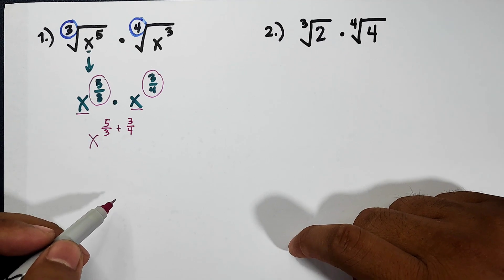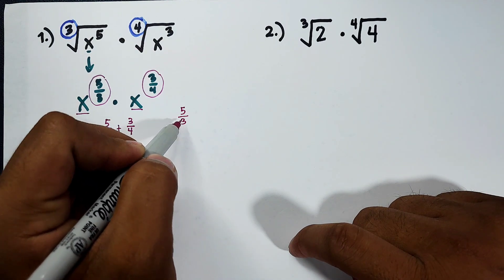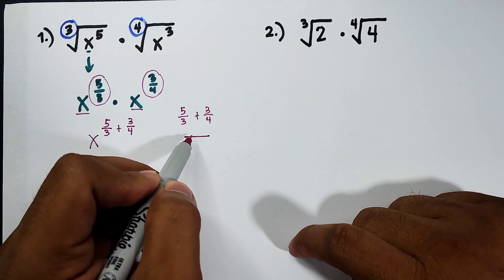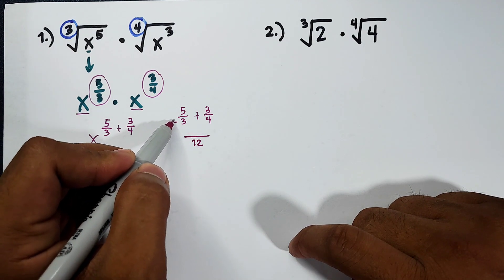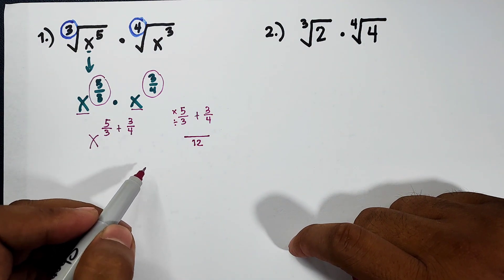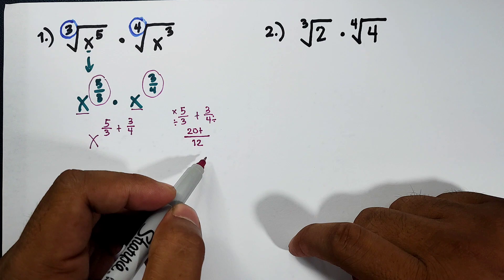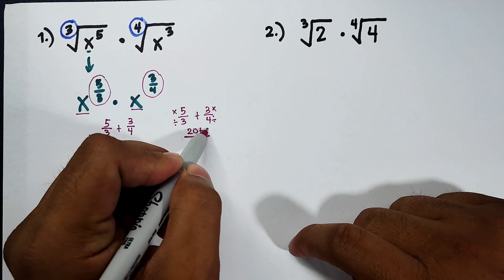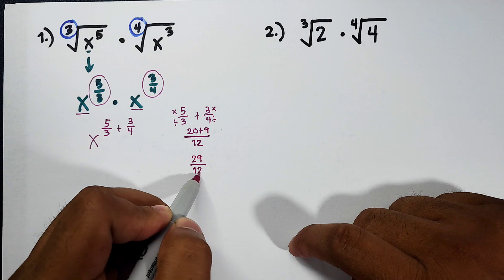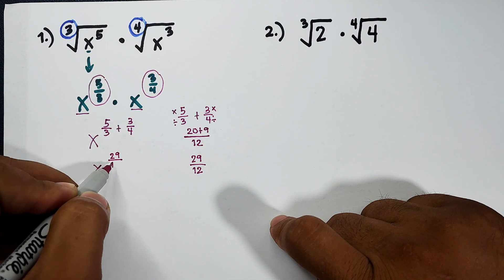I'm trying to add the fractions separately. So we have 5 over 3 plus 3 over 4. I will get the LCD of the denominators 3 and 4, which is 12. 12 divided by 3 is 4, times 5 is 20. Plus 12 divided by 4 is 3, times 3 is 9. So what we have now is 20 plus 9, which is 29 over 12. So this is now the exponent of x — it will become x raised to 29 over 12.